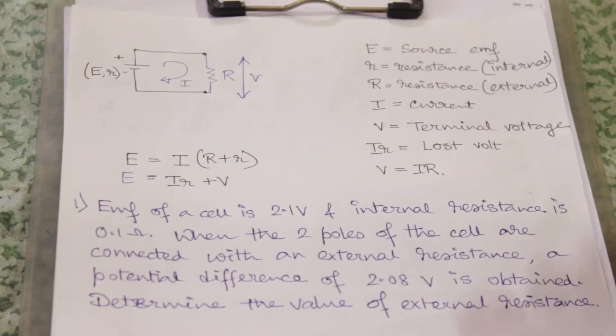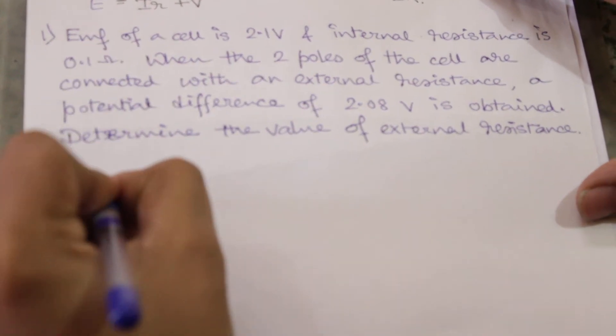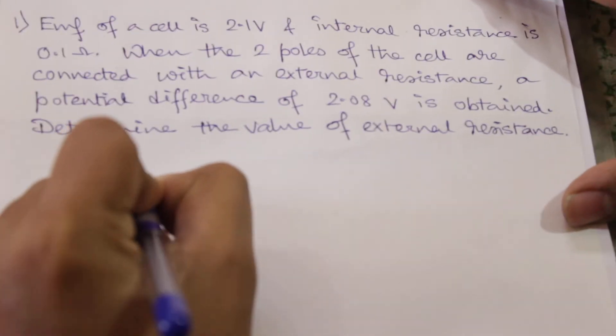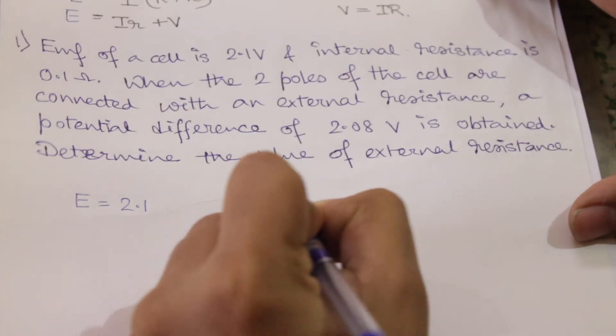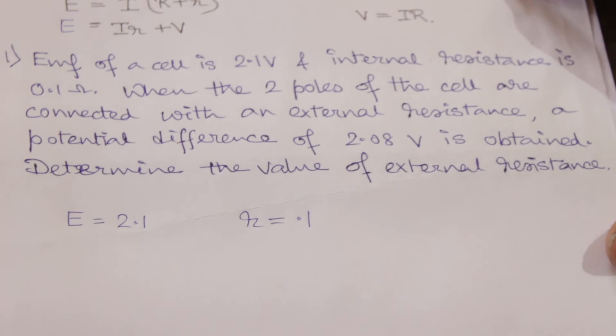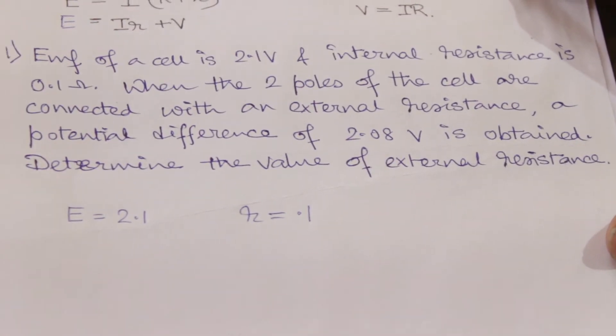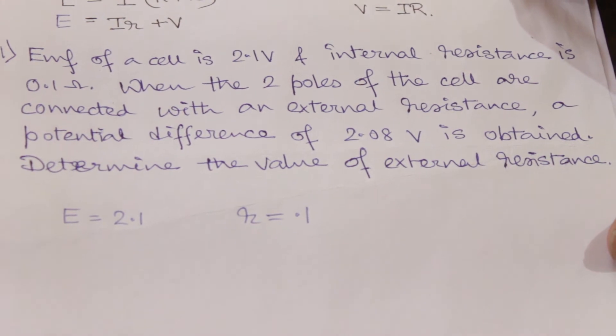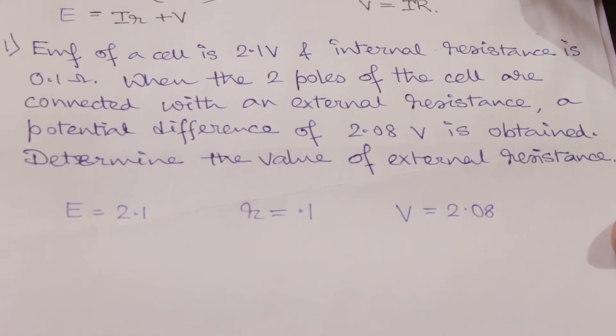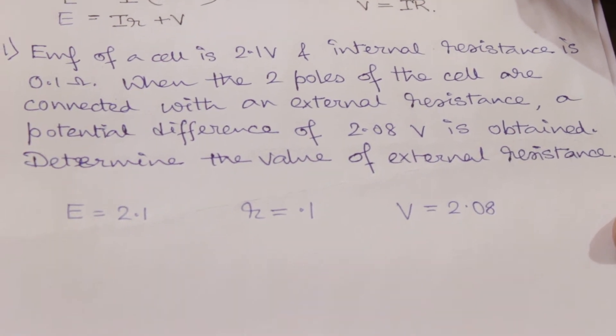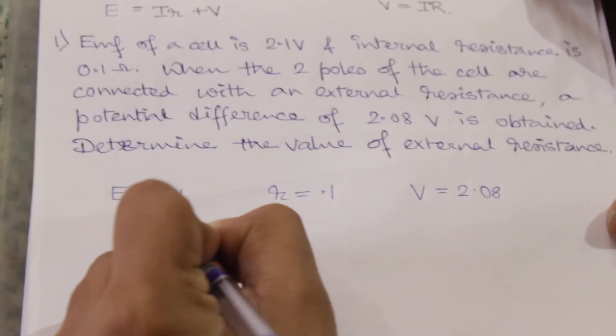Using this formula we will be solving some problems related to electric cell. So first one: EMF of a cell is 2.1 volts, so capital E is 2.1. Internal resistance is 0.1. When two poles of the cell are connected with an external resistance, the potential difference of 2.08 volts is obtained, so V is 2.08. Determine the value of external resistance.